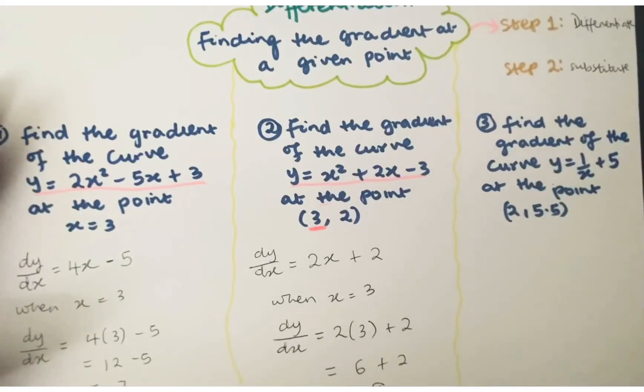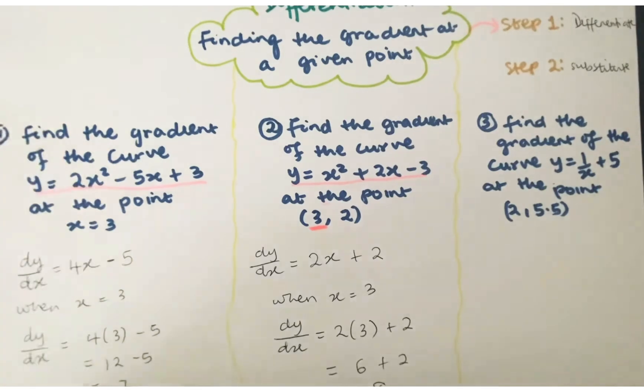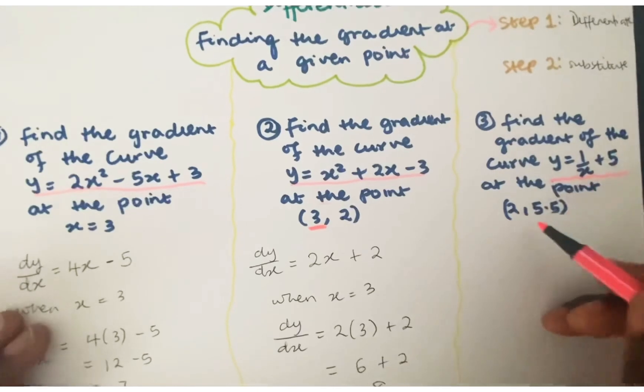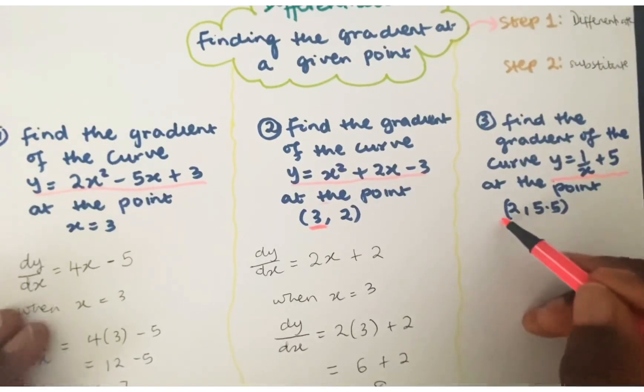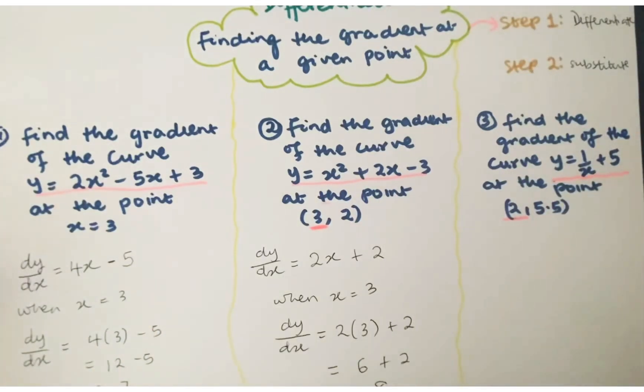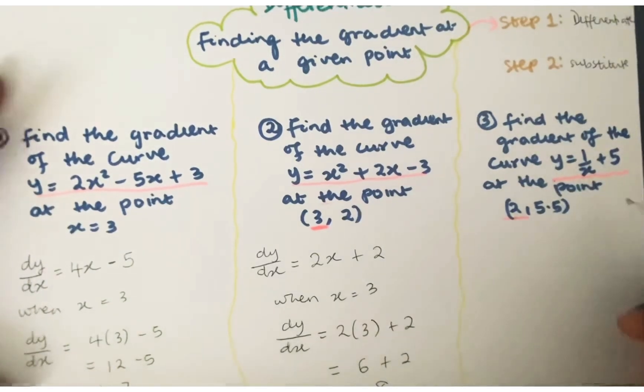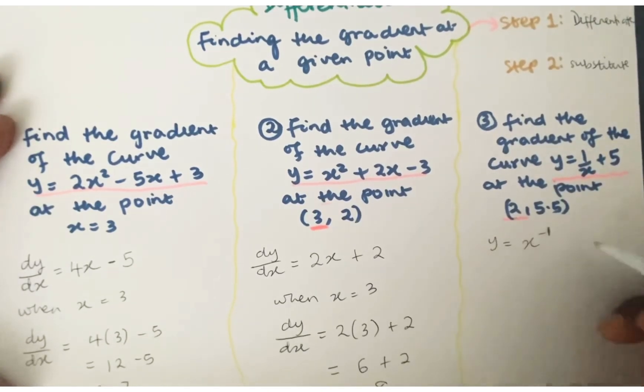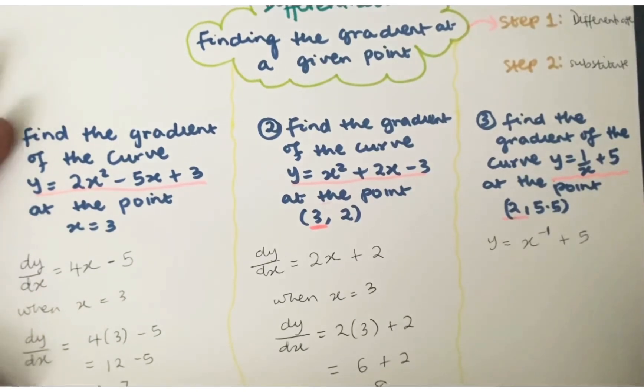In this last example, it says to find the gradient of the curve y is equal to 1 over x plus 5 at the point (2, 5.5). So the x coordinate there would be 2. So I think you've seen 1 over x there, and that might push you off a little bit, but you don't have to be put off. Remember, if you want to differentiate, it's easier to work with powers. So rewrite this fraction here using powers. That would be the same thing as y is equal to x to the power of negative 1 plus 5. And now we can easily differentiate.